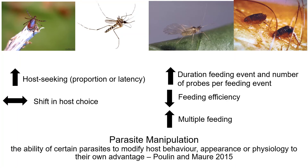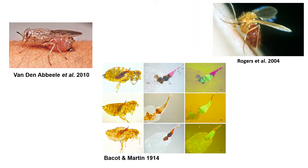Across all of these diverse systems and diverse behaviors, almost all of these changes are interpreted as parasite manipulation, and I think this is a really reasonable hypothesis. As we'll be discussing more over the next few days, parasites clearly have the potential to alter a broad range of phenotypic traits in their hosts, extending from physiology to behavior. In many of the at-host feeding examples, there's really nice data demonstrating a clear mechanism by which pathogens are altering host behavior. To summarize, in many instances there's good evidence that parasites either block or damage the mechanisms that are used for feeding, and this is what leads to changes in probing duration and the efficiency of feeding behavior.